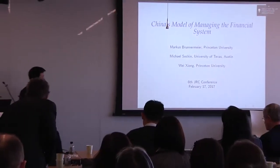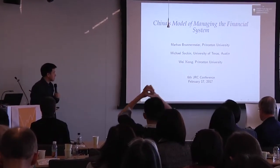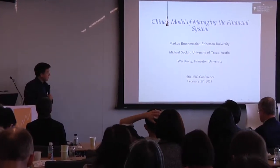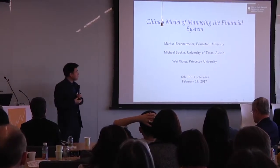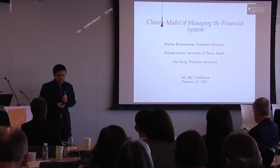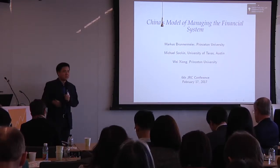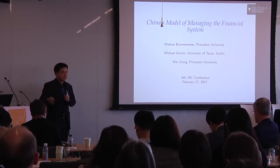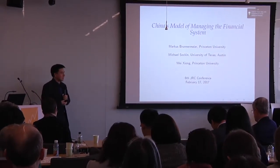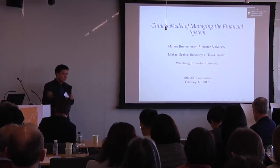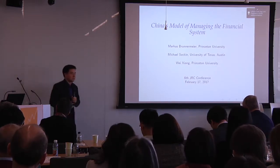This is a joint paper with a colleague Max Brunemeyer, as well as a former student Michael Sorkin. This paper is about how to understand the important sources of risk in China. We're going to have later in the afternoon a full session about that escalating debt problem in China, so a lot of risk — people are concerned about China's financial markets.